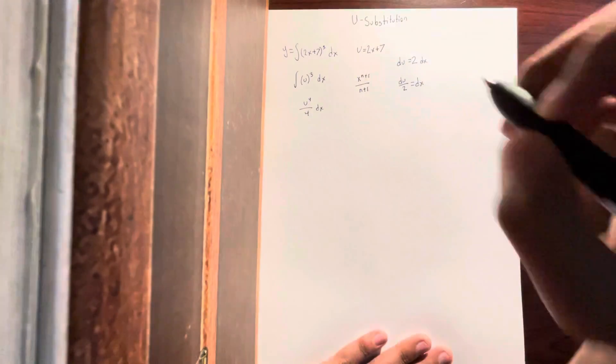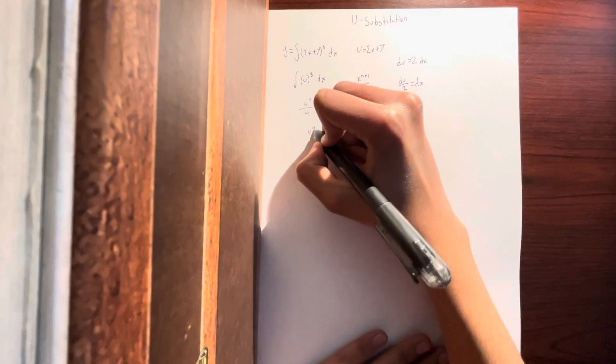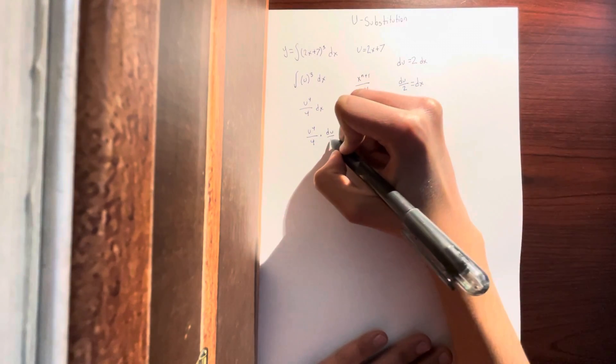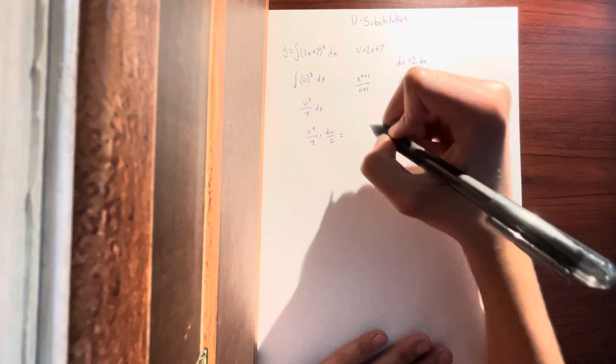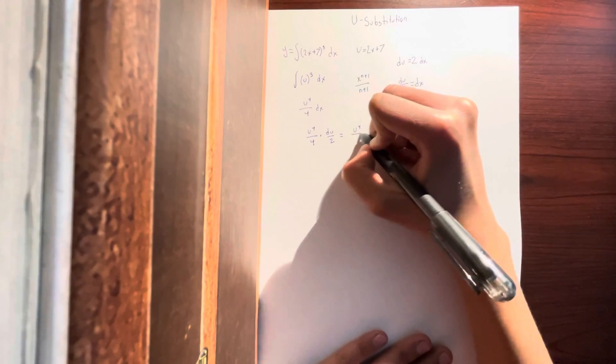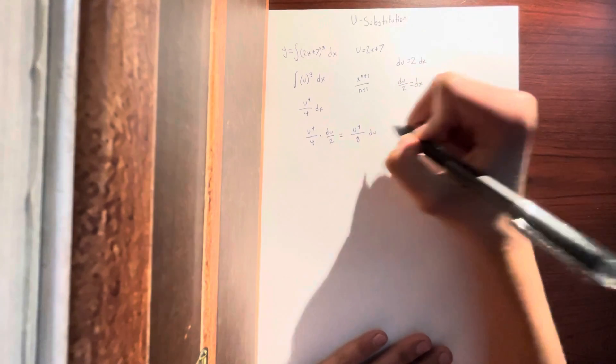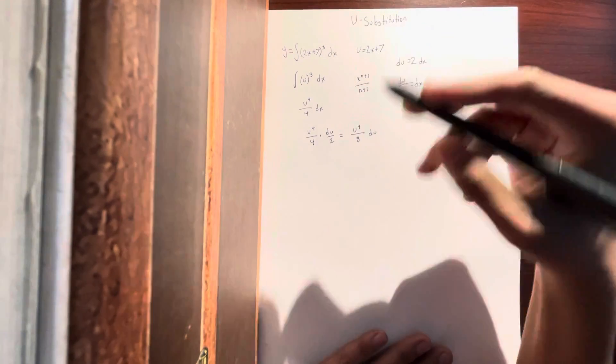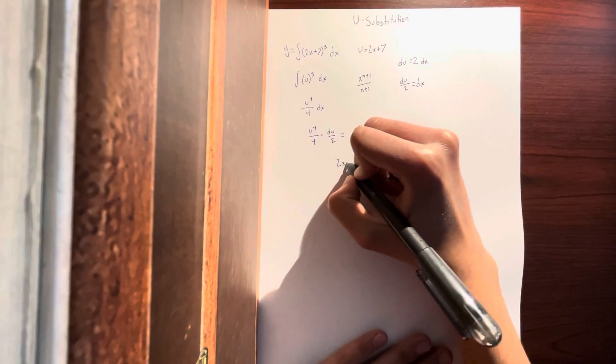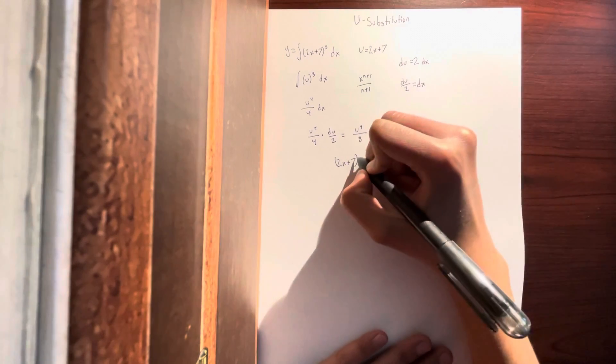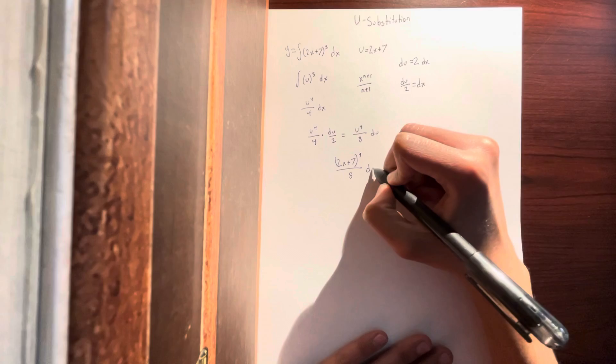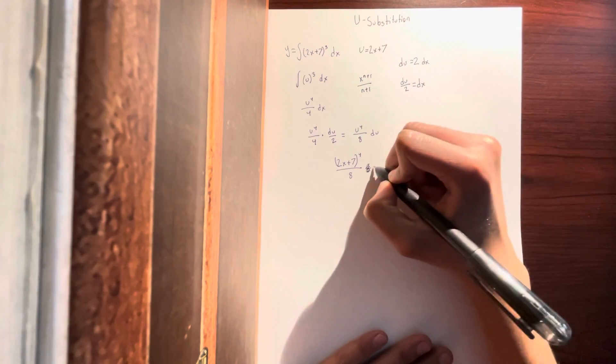You then plug it in. So u⁴/4 times du/2, which then would mean u⁴/8 du. You finally plug back in u and you get (2x + 7)⁴/8 + c.